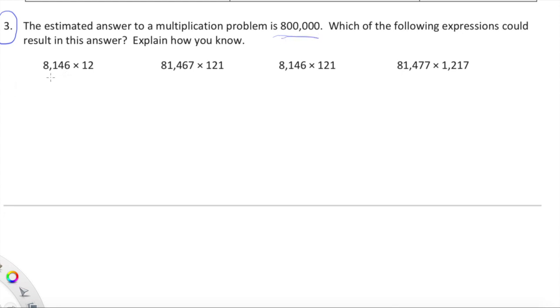So 8,146 times 12. 8,146 is pretty close to 8,000 and 12 is pretty close to 10. So round 8,146 to 8,000 and 12 to 10. 8 times 1 is 8, but that's not 8 times 1. It's 8,000 times 10. So it's going to be an 8 with 1, 2, 3, 4 zeros at the end because it's 8,000 times 10 or 10 copies of 8,000, 80,000. Are 80,000 and 800,000 close together? No, this is not going to be a possible expression that would result in a product of 800,000. So I'm just going to cross it off. I showed my math and I'm just going to cross it out meaning, nope, that's not our jam. The first one is not going to work.